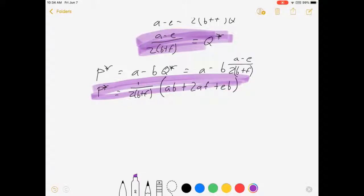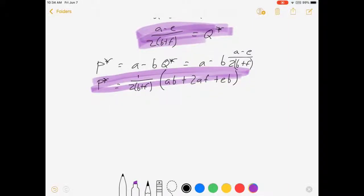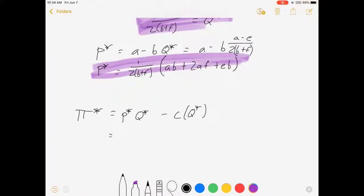Now to solve for profit, which is sort of the last thing I'm going to ask anyone to do most of the time. Profit is equal to P star times Q star minus C of Q star. I don't want to solve the whole thing. You can substitute it if you want to. That's A minus BQ star times Q star minus D minus EQ star minus FQ star squared.